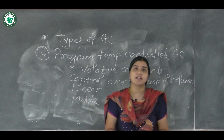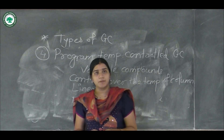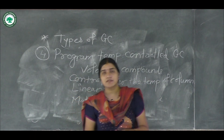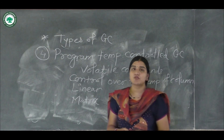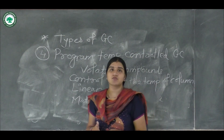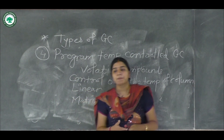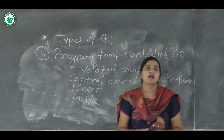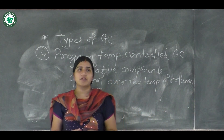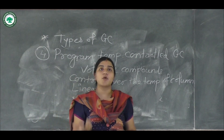In summary, there are four types of GC: packed column GC using a packed column, capillary column GC using a support-coated capillary column that is very thin and long, program scale GC especially for reaction mechanism in organic chemistry, and program temperature controlled GC. The next important point is the optimization of GC.